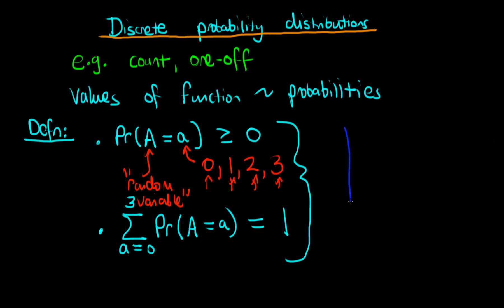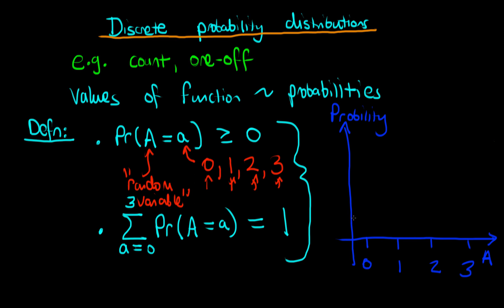What might a discrete probability distribution look like for our apples example? On the bottom axis we have the number of apples in our bag — big A — with possible values zero, one, two, and three, since the bag has a maximum capacity of three. The y-axis is just probability. One potential distribution assumes all outcomes are equally likely: the probability of having zero, one, two, or three apples are all the same. To satisfy the second condition, the sum of all individual probability values must be one, which means the probability of any individual outcome is just one quarter.